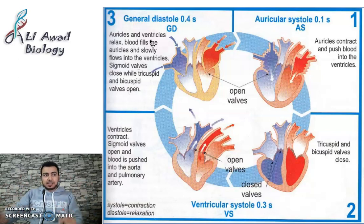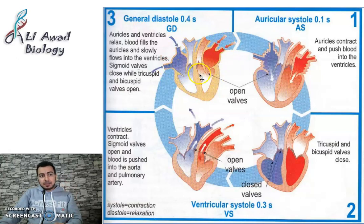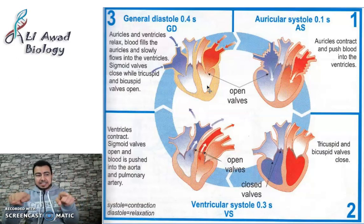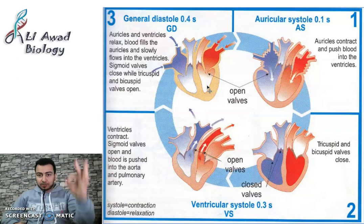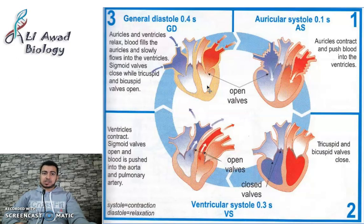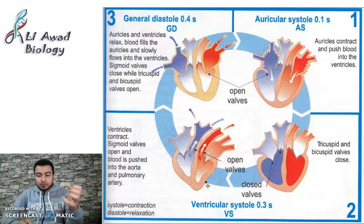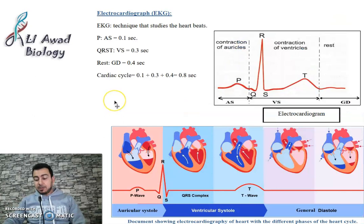The general diastole is where the heart relaxes; it takes blood from the body through the vena cava and pulmonary veins to the auricles, with the bicuspid and tricuspid valves open. This phase takes 0.4 seconds. So the total cardiac cycle is 0.1 + 0.3 + 0.4 = 0.8 seconds, divided into 0.4 seconds of contraction and 0.4 seconds of relaxation.